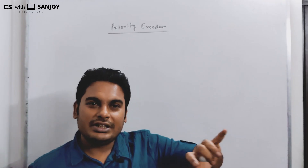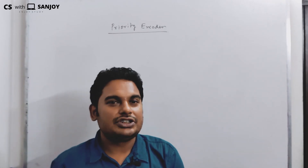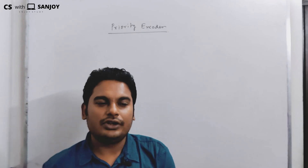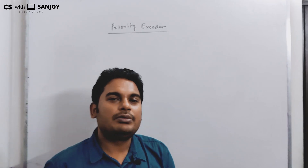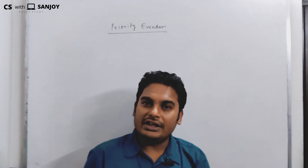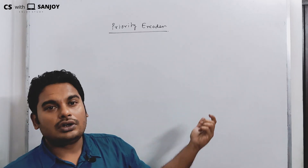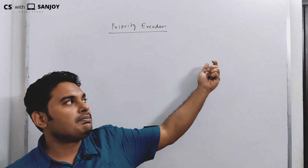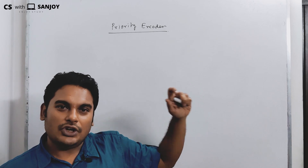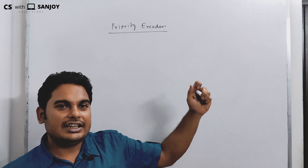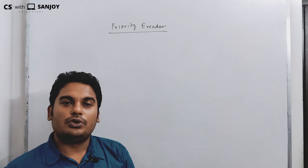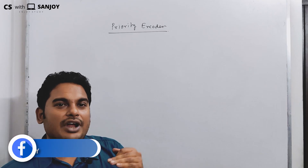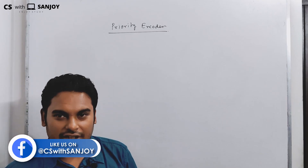We already discussed that the decoded version of a code, when encoded, is called an encoder. Encoding means shortening. We already saw examples of BCD to binary encoder and octal to binary encoder. Those examples were solved. So now let's see how the priority encoder is designed.